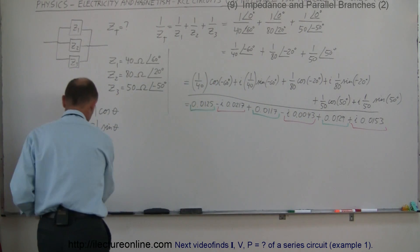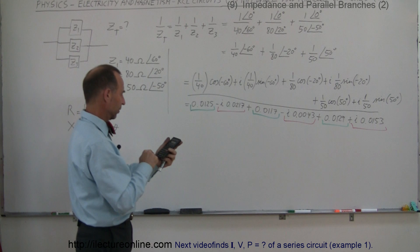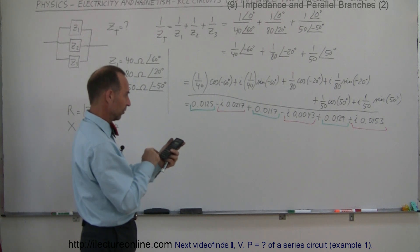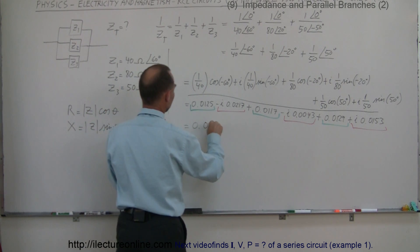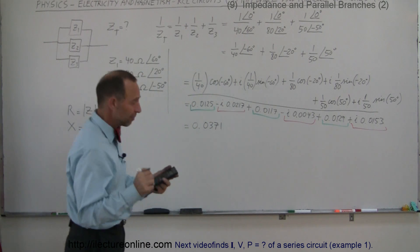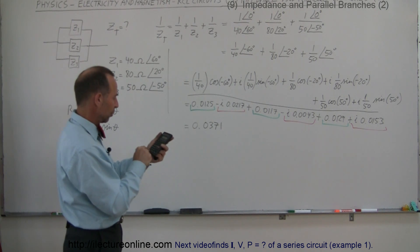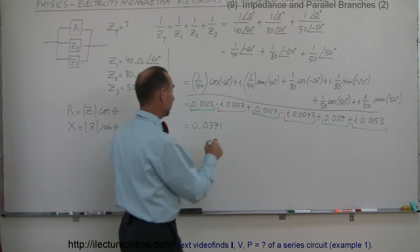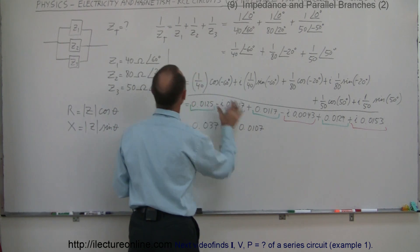Adding the real parts: 0.0125 plus 0.0117 plus 0.0129 equals 0.0371. For the imaginary parts: minus 0.0217, minus 0.0043, and plus 0.0153 equals minus j times 0.0107. So one over Z total equals 0.0371 minus j times 0.0107. Remember this is still one over Z total.